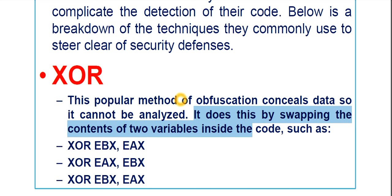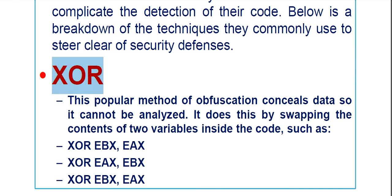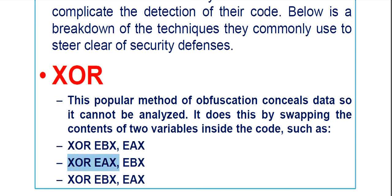If someone asks you for an example of a popular method of obfuscation, then XOR belongs to that. For example: XOR EBX, EAX; then XOR EAX, EBX; then XOR EBX, EAX. I hope you know what EBX and EAX are — these are CPU registers.